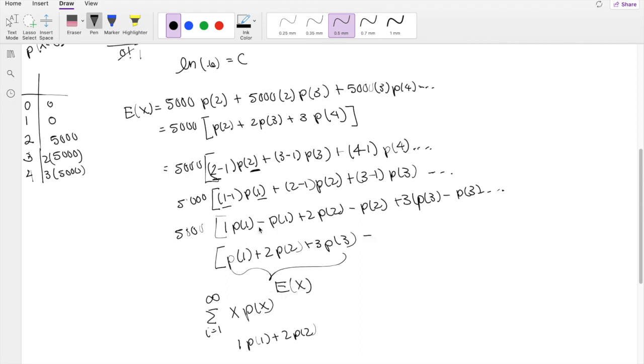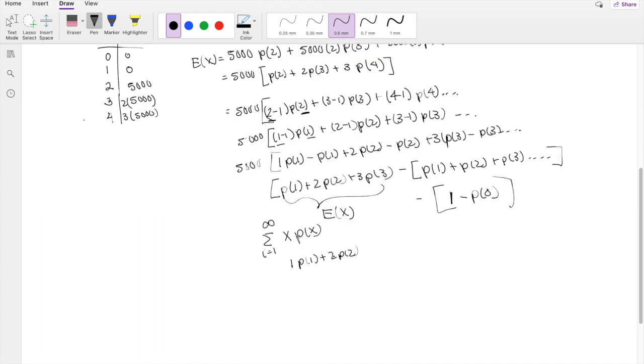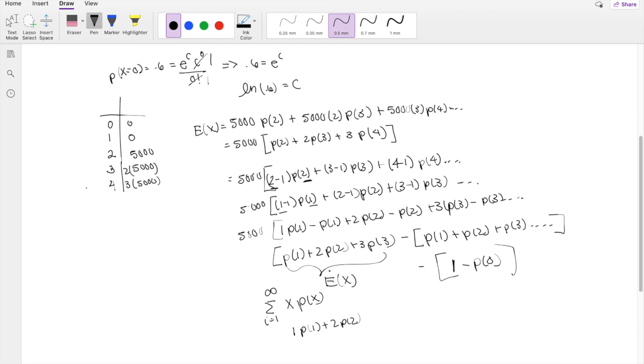However, this side right here, if we factor out the negative, you're going to get probability of 1 plus probability of 2 plus probability of 3, and so on. Or you can think of this as everything, right, everything we know all probability has to add up to 1 minus probability of 0, so we're just taking a complement.